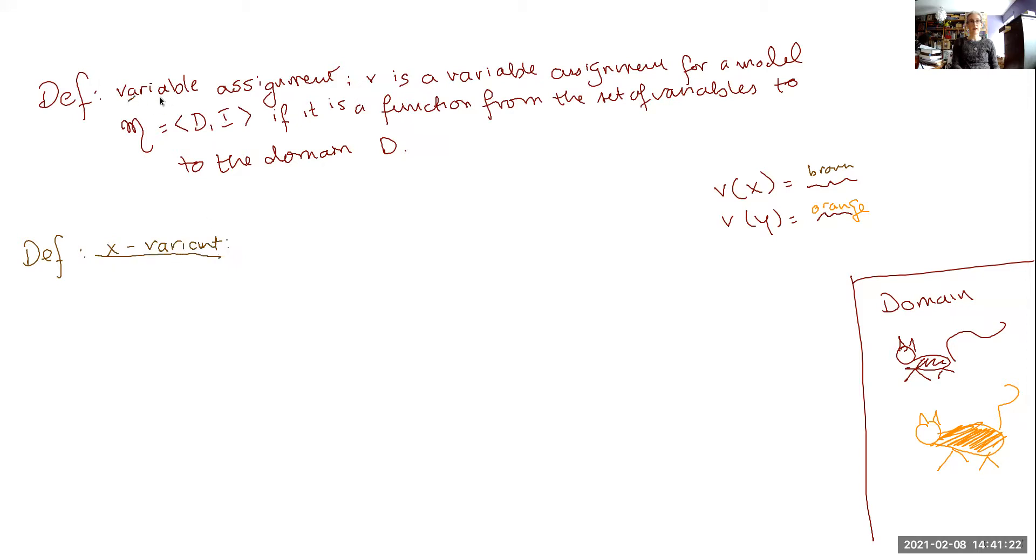So here we had our variable assignments, and here we have the notion of an x variant. So a variable assignment, v prime, is going to be an x variant of some variable assignment, v.